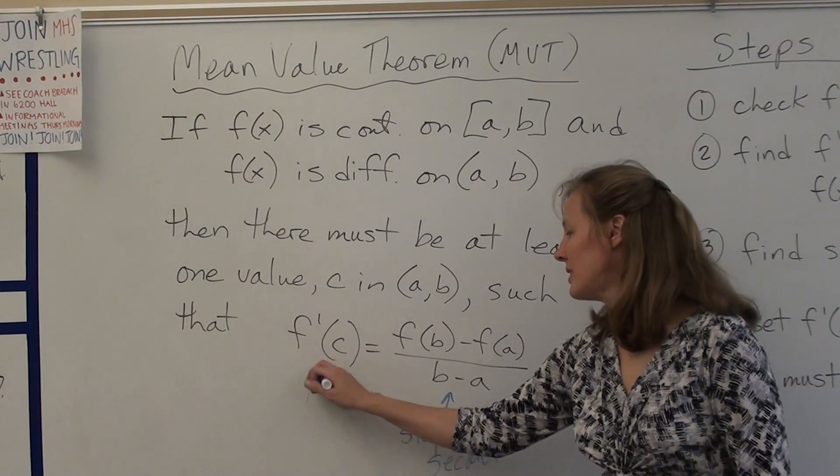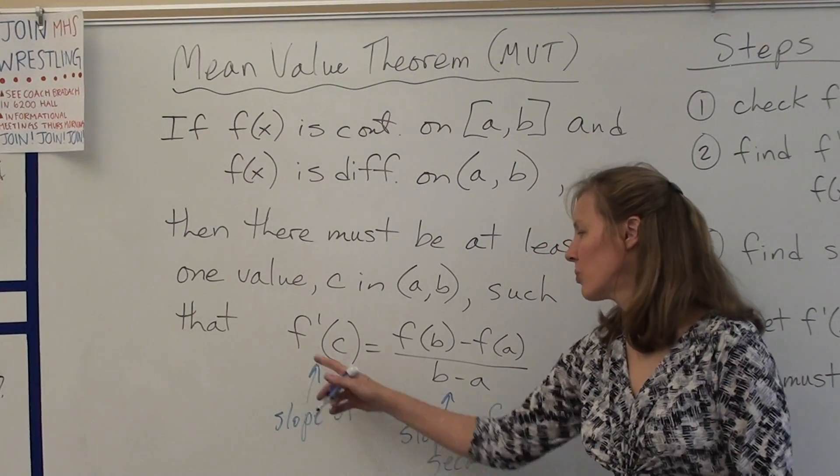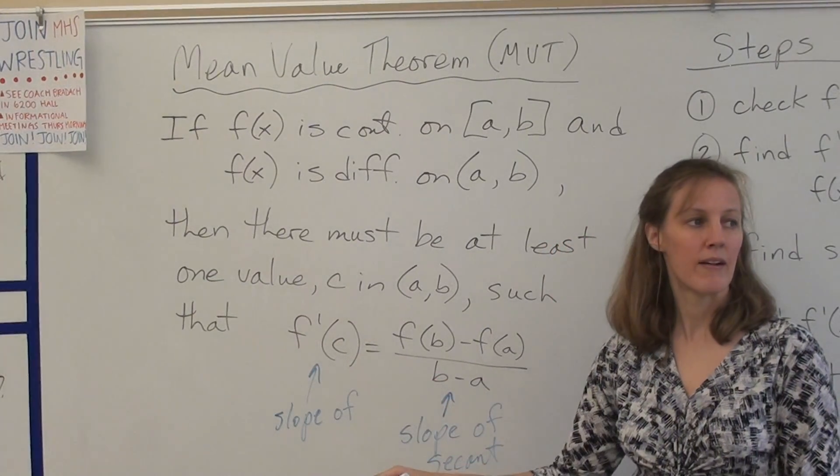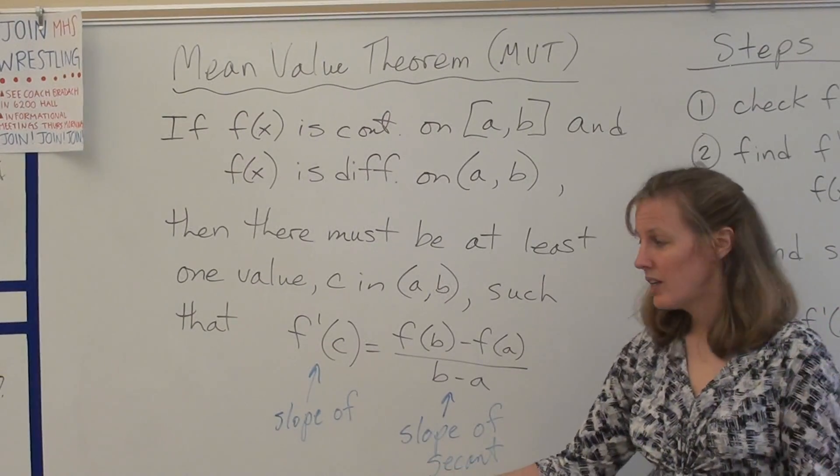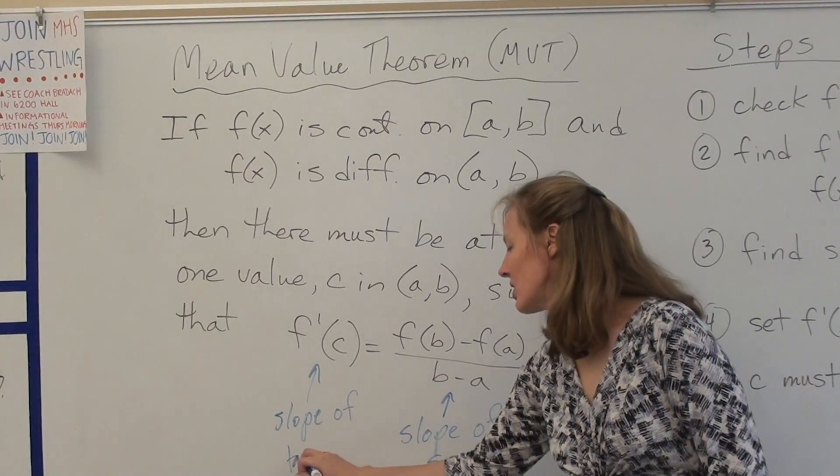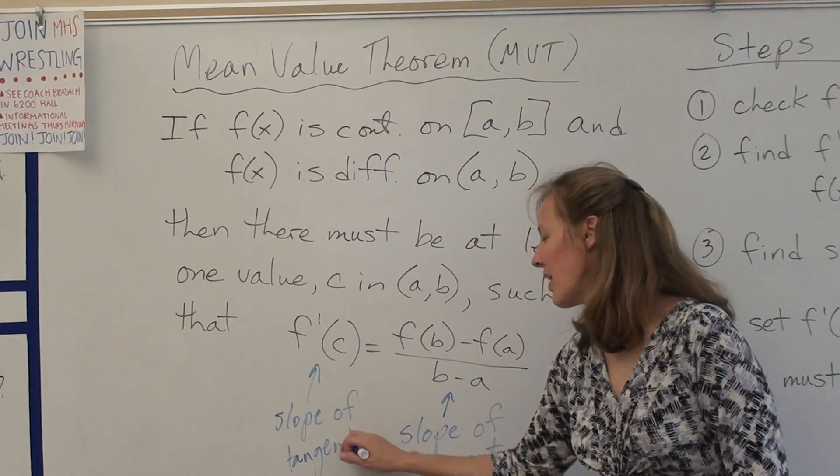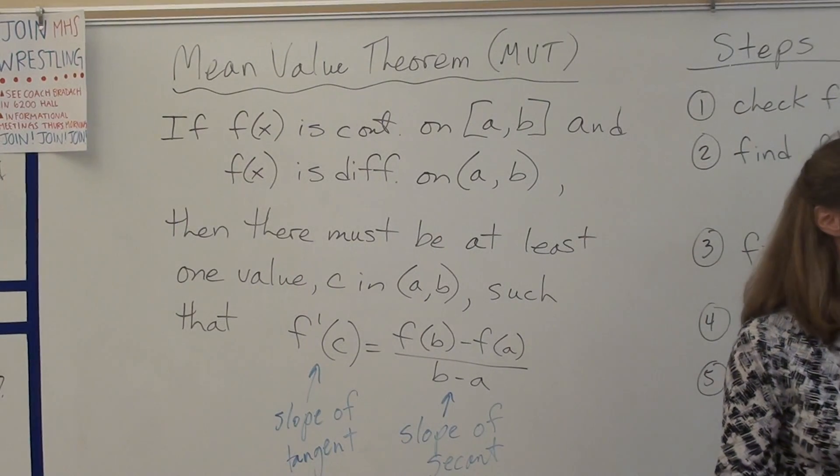f prime of c is slope of the tangent, the derivative is slope of the tangent line at that one value. So here's what the Mean Value Theorem says in a nutshell.